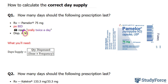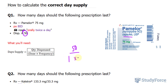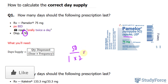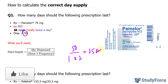So the quantity to dispense, according to this, is 50, while the dosage is one capsule, and the frequency is twice a day. So 50 divided by one times two. Dividing out these numbers gives you 25 days. So this medicine should last this person 25 days.